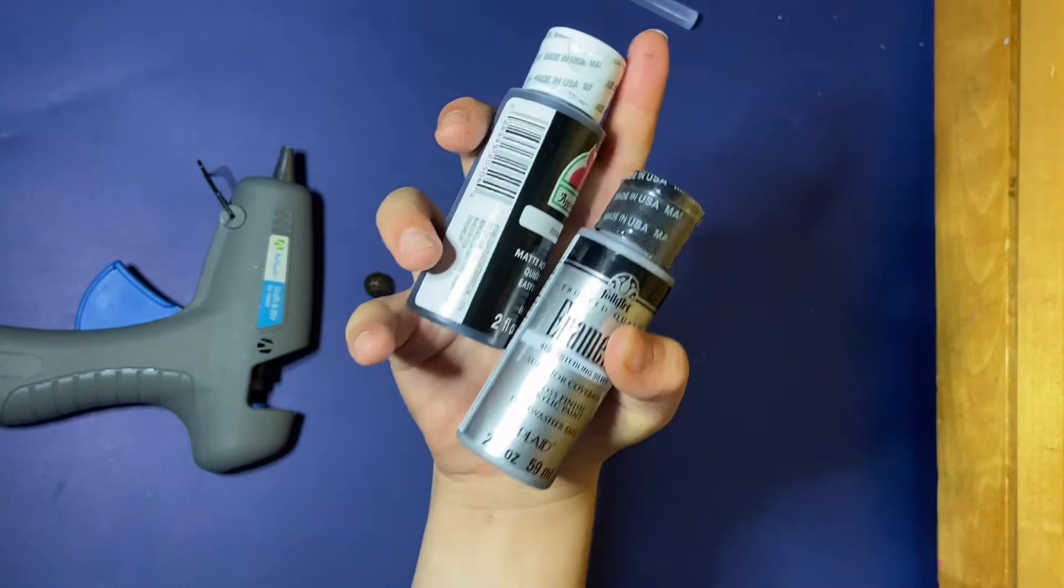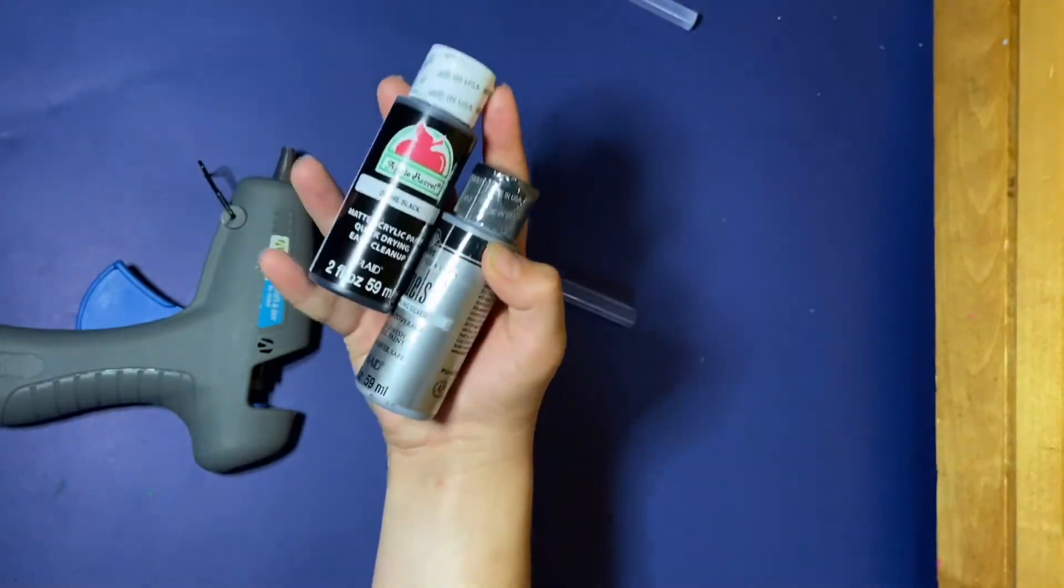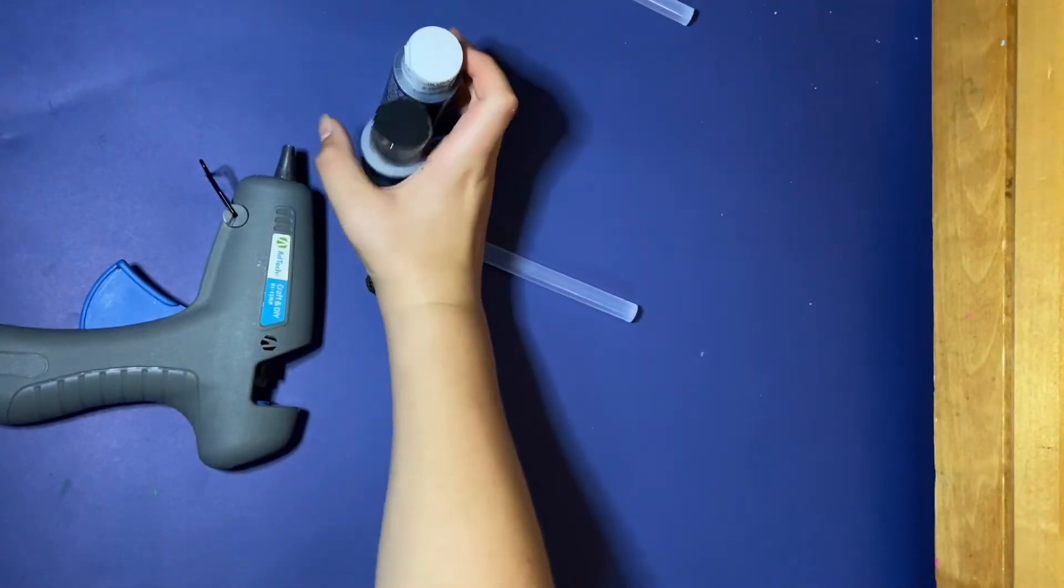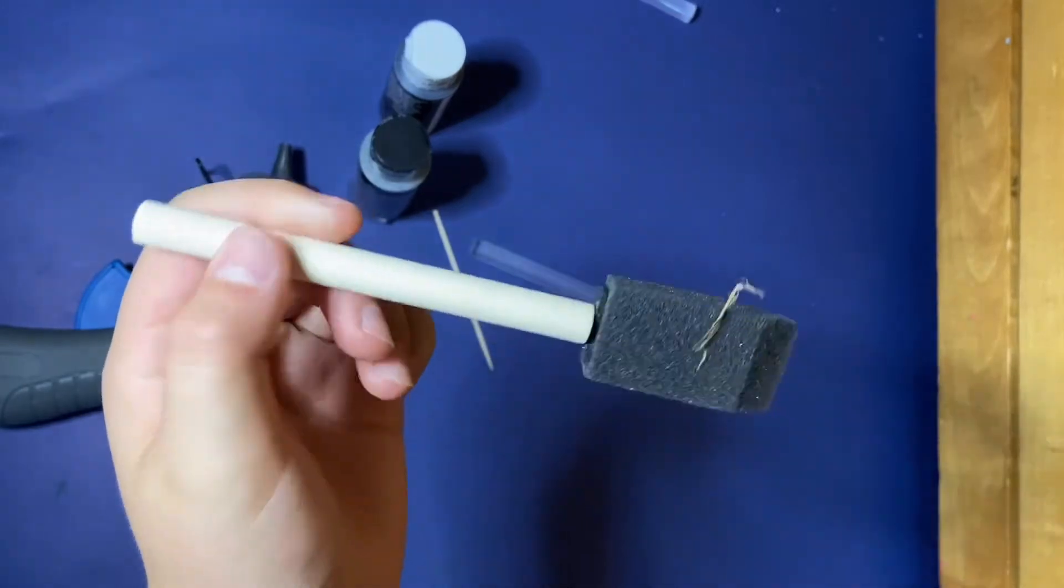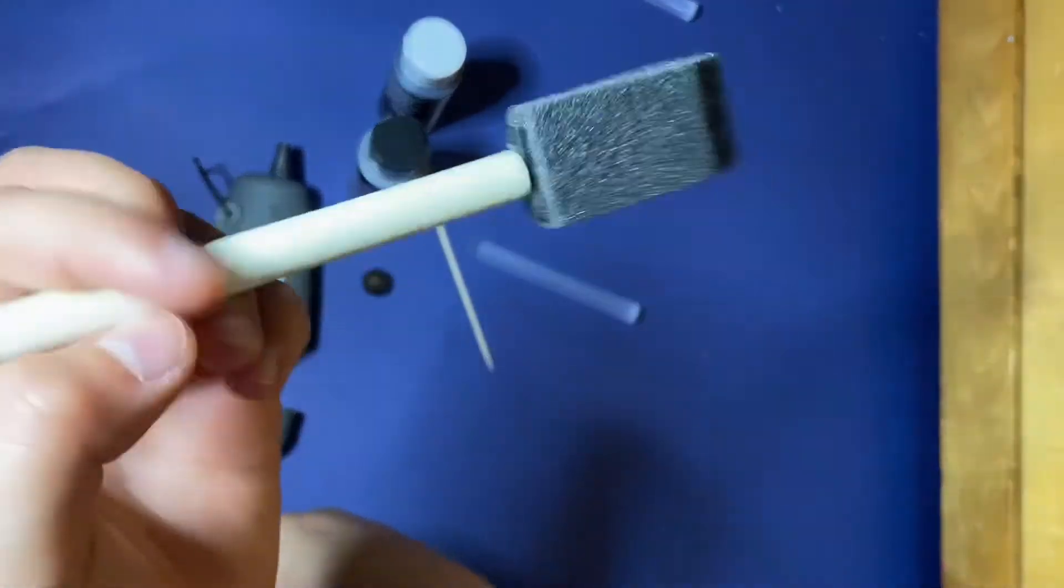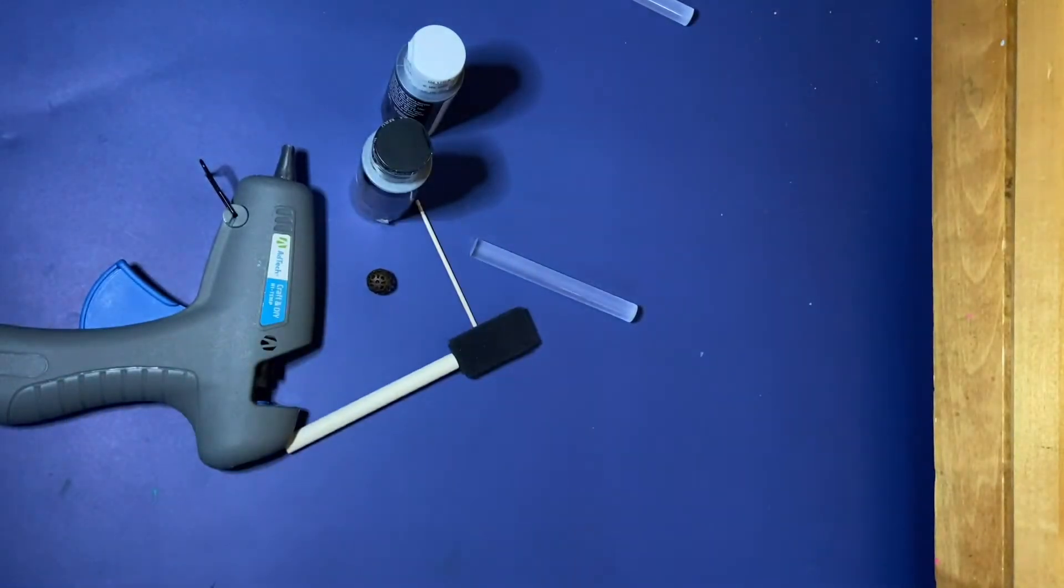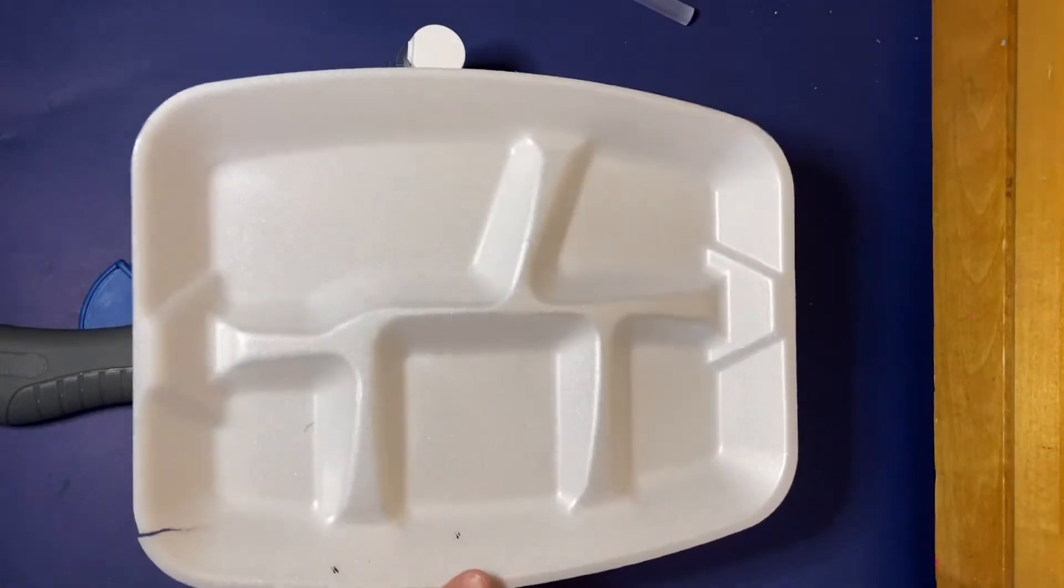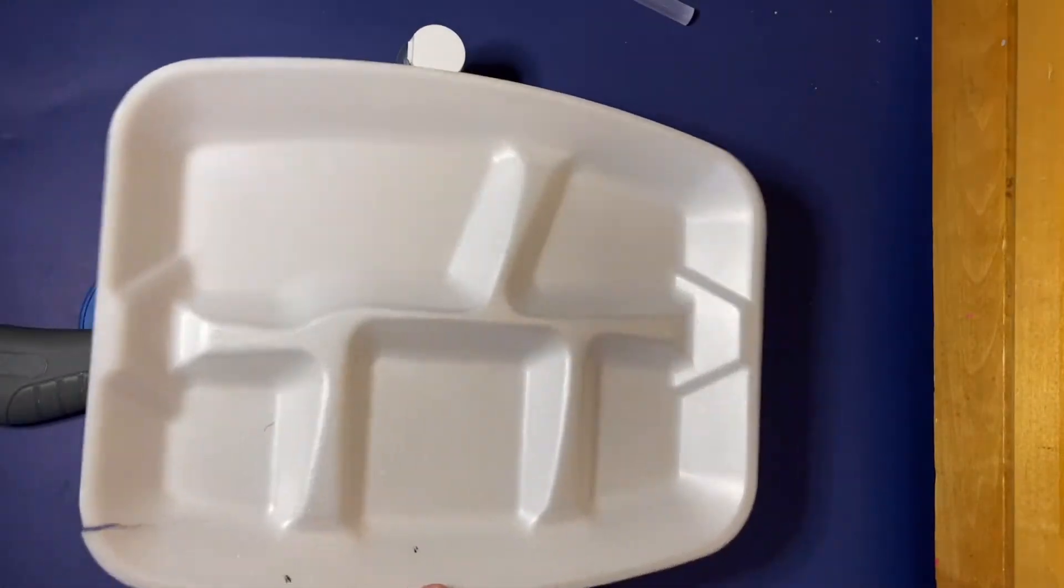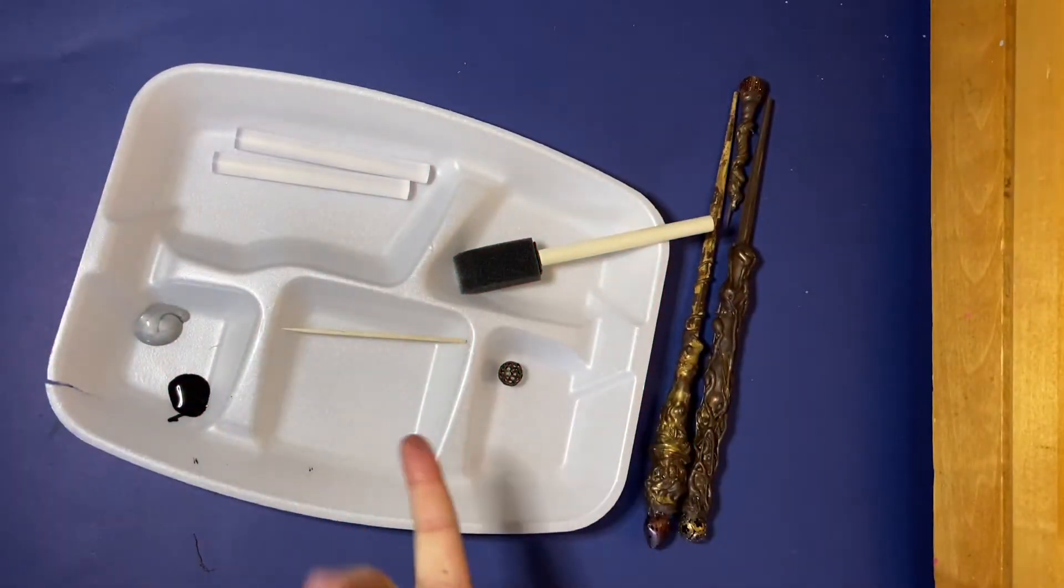Some paint - you'll need like a metallic undercoat and then the coat that you want your wand in. And you'll need a brush. I'm just using this little sponge brush. I am actually going to be doing this on a paper plate. I will get everything laid out and I will get back to you.